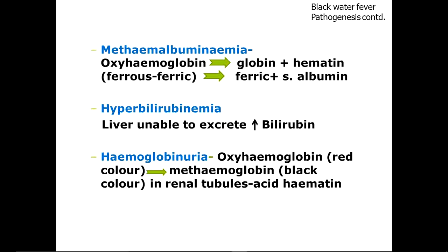There are three effects of intravascular hemolysis. Number one is methemalbuminemia. If something is accumulating in blood it is 'emia,' and if in urine it is 'uria.' In methemalbuminemia, oxyhemoglobin in blood is broken down into globin and hematin. Initially this hematin is in the ferrous state, which gets converted into the ferric state, then combines with serum albumin to form methemalbumin. This is not excreted in urine because the glomeruli cannot filter methemalbumin, and therefore it is retained in plasma, causing methemalbuminemia.